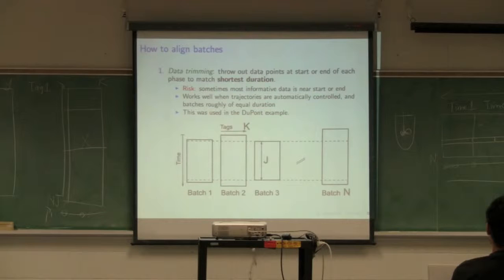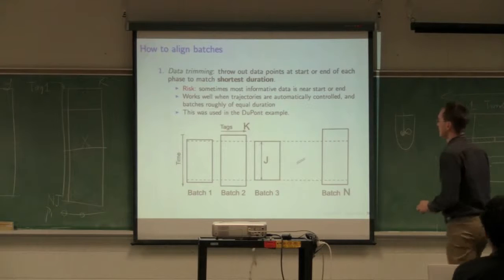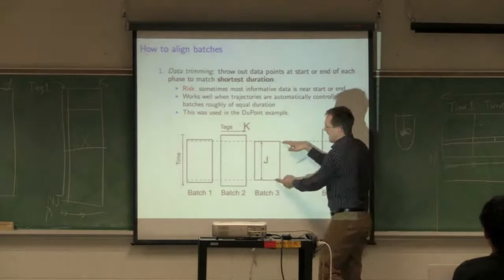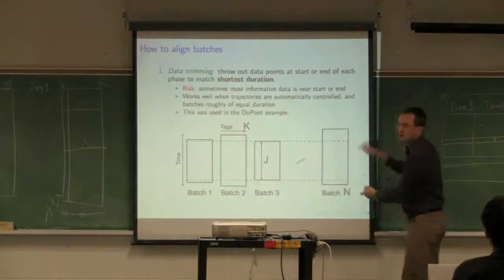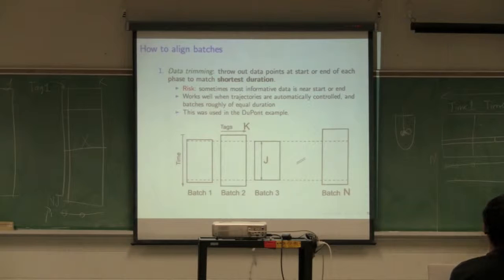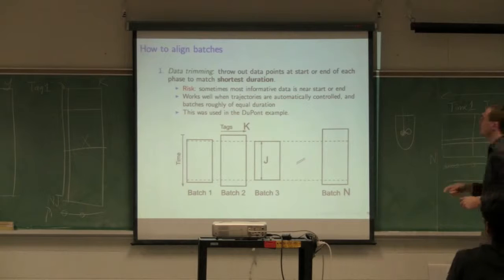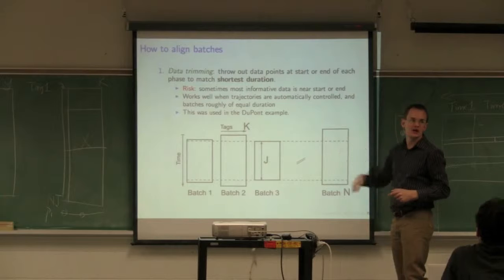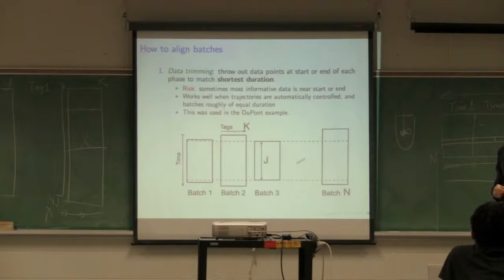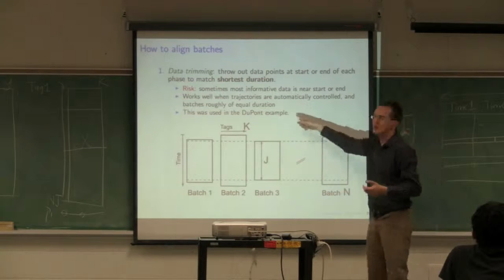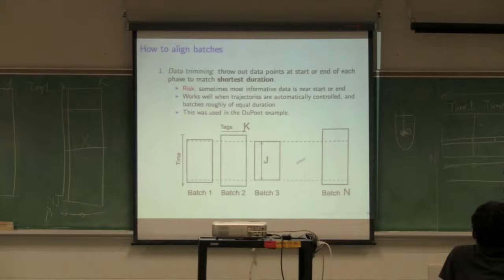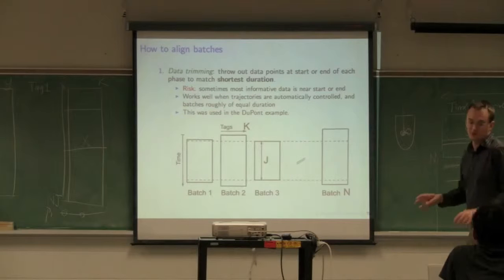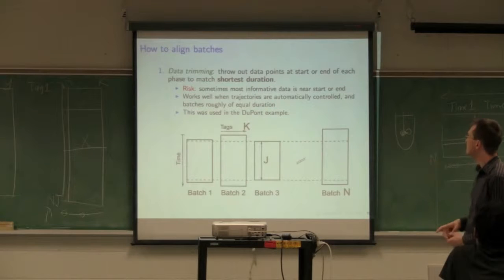The other big problem is when you have manual batches. I've seen this too many times. The recipes say apply agitation until well-mixed. The operator sits there looking and says okay, I think it's well-mixed, and goes to the next phase. The moment you have that, you're going to get unaligned batches.